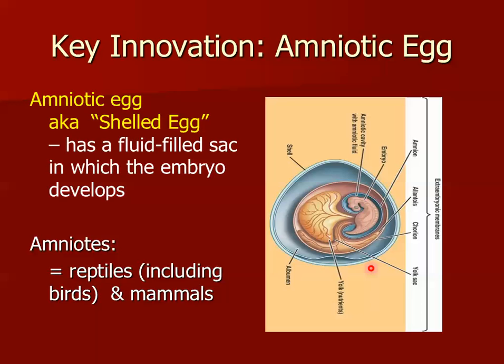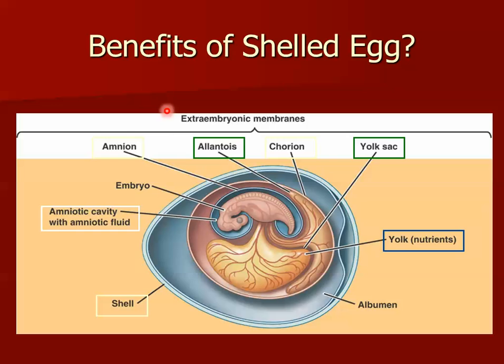The shelled egg really allows reptiles to become truly terrestrial and totally divorced from their dependency on water. Let's look at the four extra-embryonic membranes. The original amniots developed these four membranes, and these were the same embryonic membranes you had around you when you were an embryo and fetus developing inside your mother, because we are mammals and mammals are amniots.